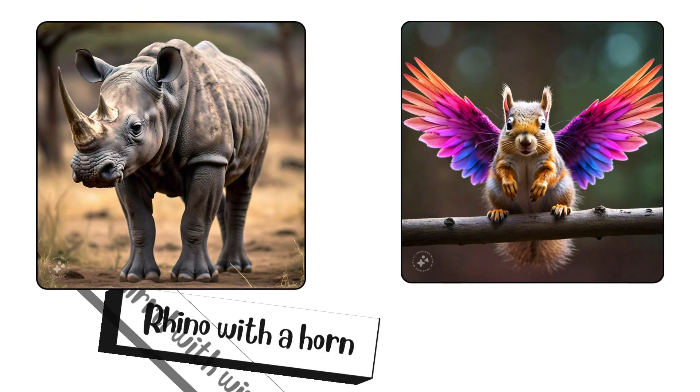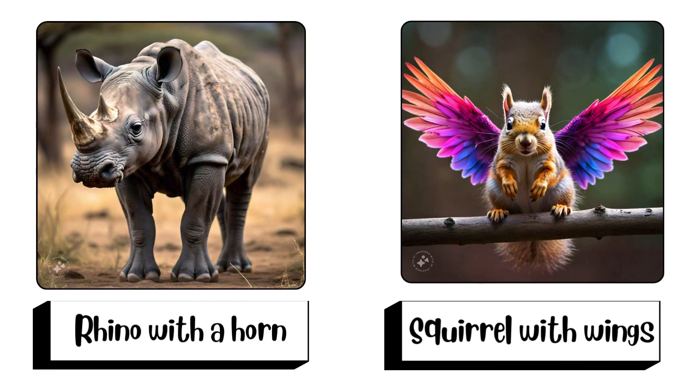Which one is incorrect? A rhino with a horn, or a squirrel with wings?